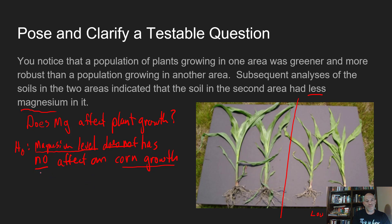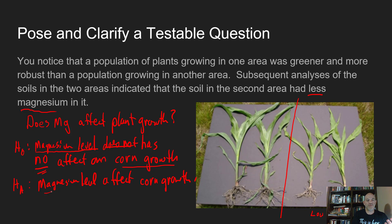That's what makes it a null hypothesis. The alternate is very simple — just make it a positive statement. Your test variable, magnesium level, affects corn growth. That's your alternate hypothesis, H₁. This statement has your test variable, your dependent variable or response variable, and the relationship between the two — that there's going to be an effect. When you do an experiment you need to write both, understand both, and then test to see which one the data supports.